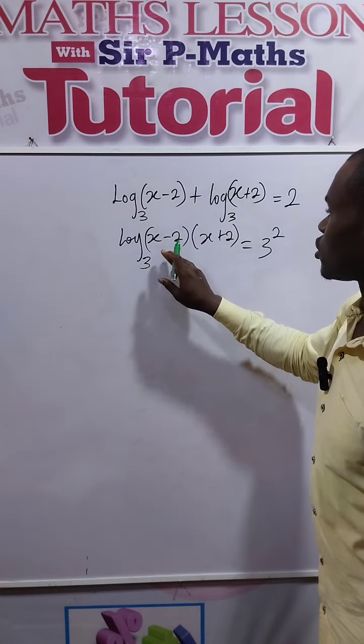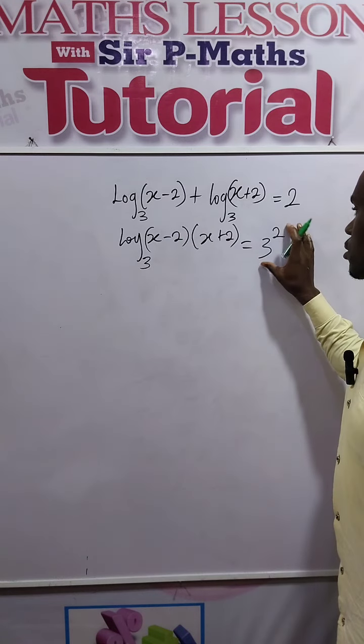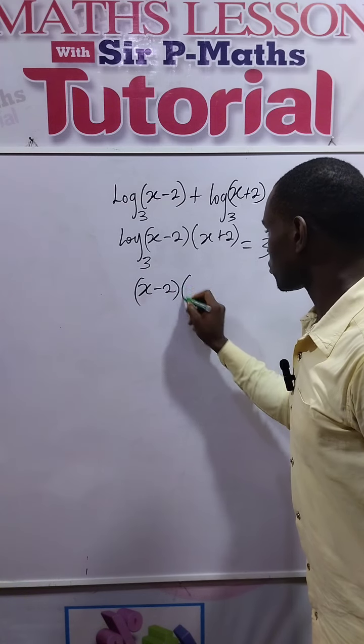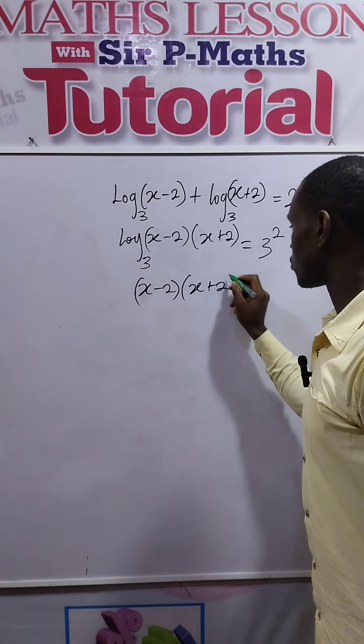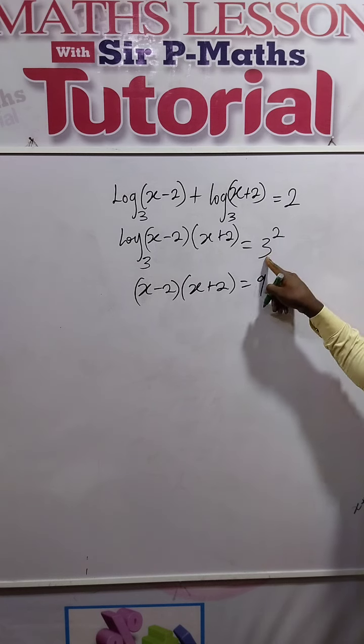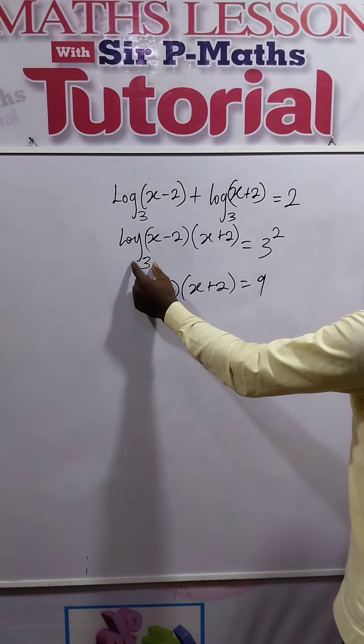So you have (x-2)(x+2) equals 8... no, 9. 3 raised to the power 2 is 9. So once you have used your base here to get the number at the right-hand side, equate the terms of the logarithms to that number.